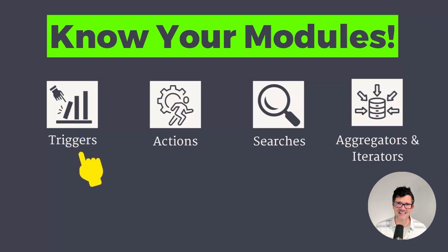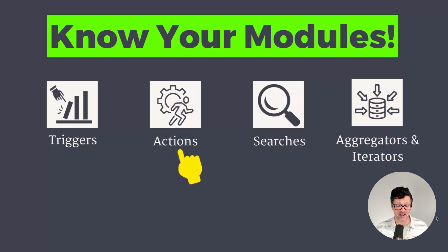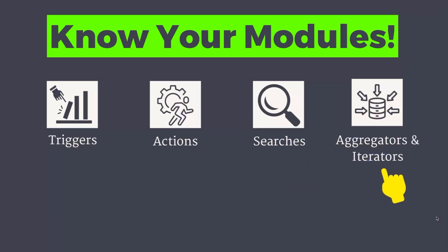It starts with triggers. Any scenario, any process inside of Make starts with some sort of a trigger. Common triggers are maybe when an email comes in — that is a watch email trigger. There are also webhooks or different ways to schedule things to happen every single day or once a week. After triggers comes action: are we going to send an email, update a record in a database, upload some files, post something to social media? There are also search modules for searching through different records, databases, looking up information. And then there are aggregators and iterators — they look through text, look through databases and iterate over items.